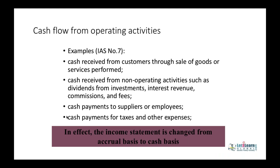Cash flows from operating activities is the main section of the cash flow statement. It is prepared using two methods: direct and indirect. Cash received from core operations is shown here. Non-operating items like interest income and dividends from investments are shown separately. Cash payments to suppliers, employees, operating expenses, interest, and taxes should also be shown under this section, as the income statement was prepared under the accrual system and is now being converted back to cash.